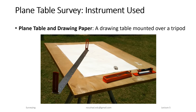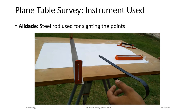You can see a different scale instrument called the Alidade. There is also a bubble tube used to check that the table is level. There is also a steel rod used in the setup.